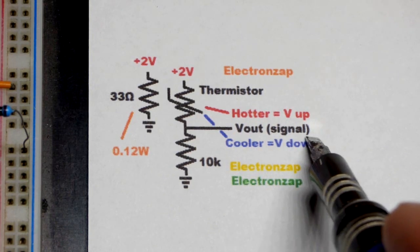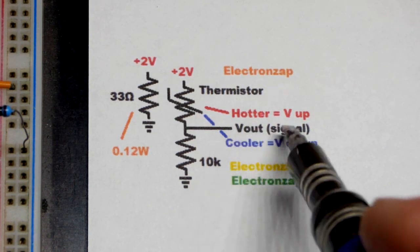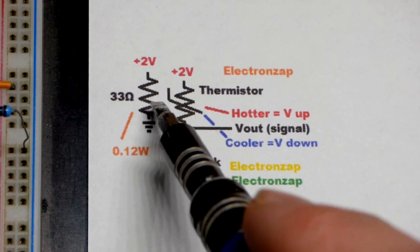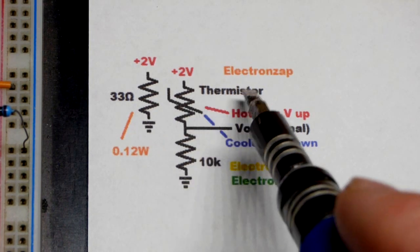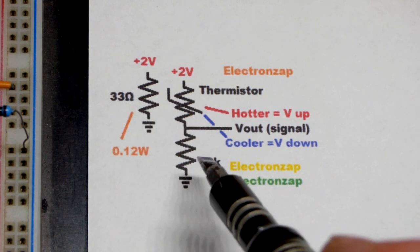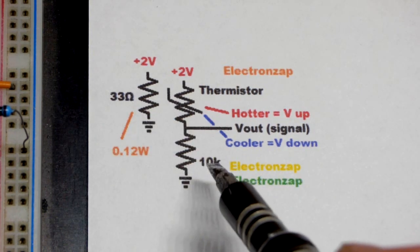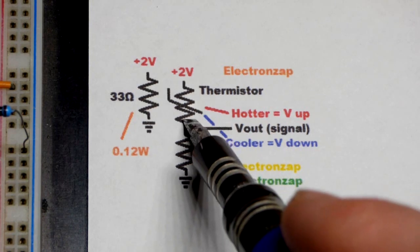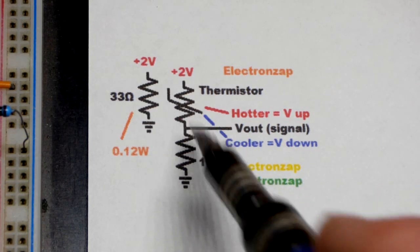Of course, this is a signal voltage. It just tells other circuitry the voltage; it's not meant to power stuff. When it gets cooler, so when I pull the thermistor away or if we blow air on the resistor, then the output voltage is going to go down. That's because as it cools down, it has more resistance.